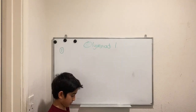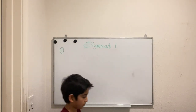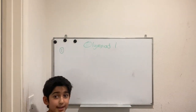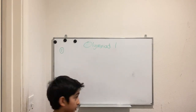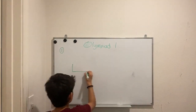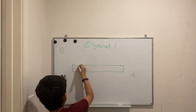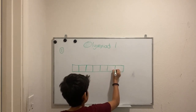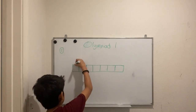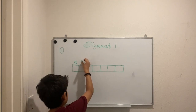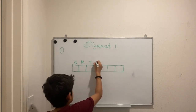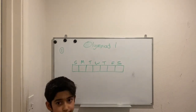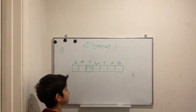Problem number one says: suppose today is Tuesday, what day of the week will it be 100 days from now? If today is Tuesday, then the next day is Wednesday and so on. Let's draw a chart to make this simpler — with six days, seven days, and six lines.